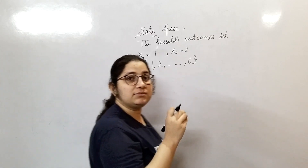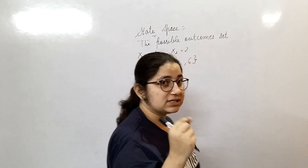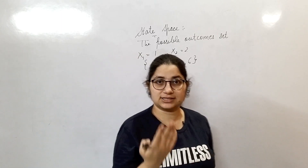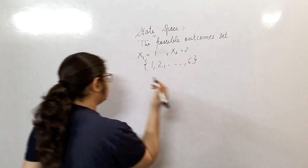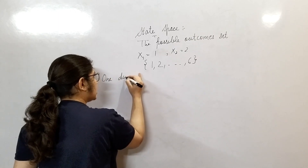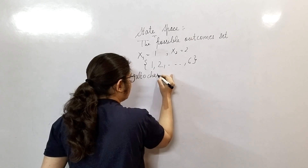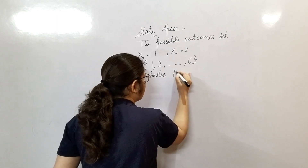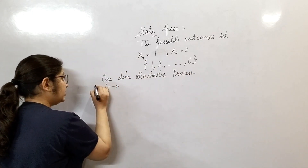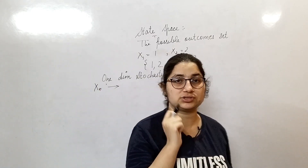State space can be discrete or it can be continuous. Before discussing whether it is continuous or discrete, I will discuss some terms with you. One-dimensional stochastic process — a value which your random variable xn assumes should be one-dimensional.